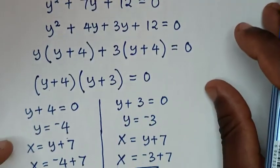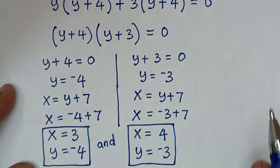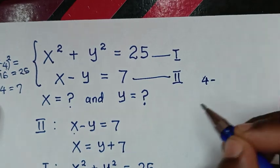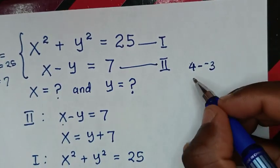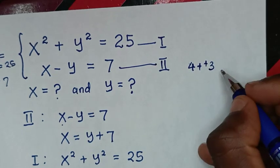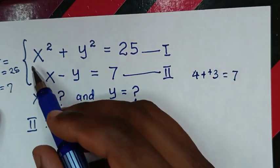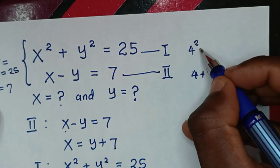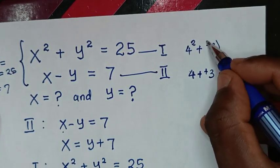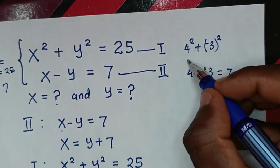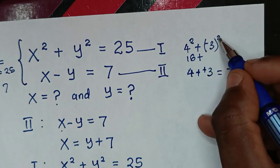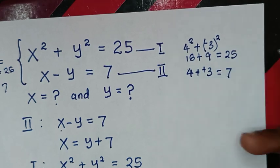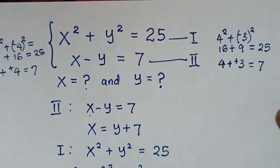For the second solution (x equals 4, y equals negative 3): checking equation 2, 4 minus negative 3 equals 4 plus 3 equals 7, correct. Checking equation 1, 4 squared plus negative 3 squared equals 16 plus 9 equals 25, correct. Therefore the values of x and y are verified.